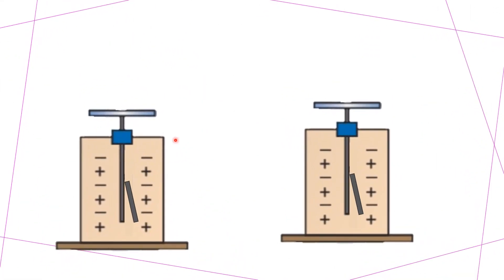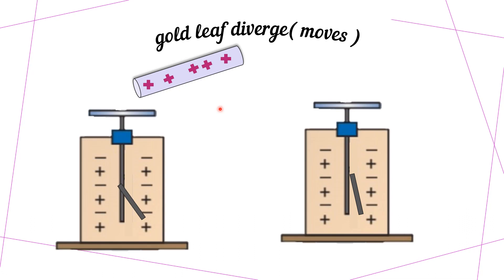This is a 2D drawing of an electroscope. When you bring a positively charged rod close to the electroscope, the gold leaf will diverge.